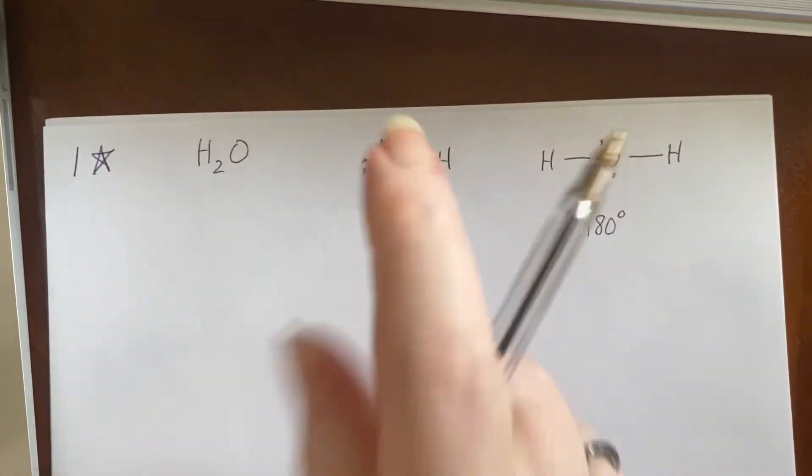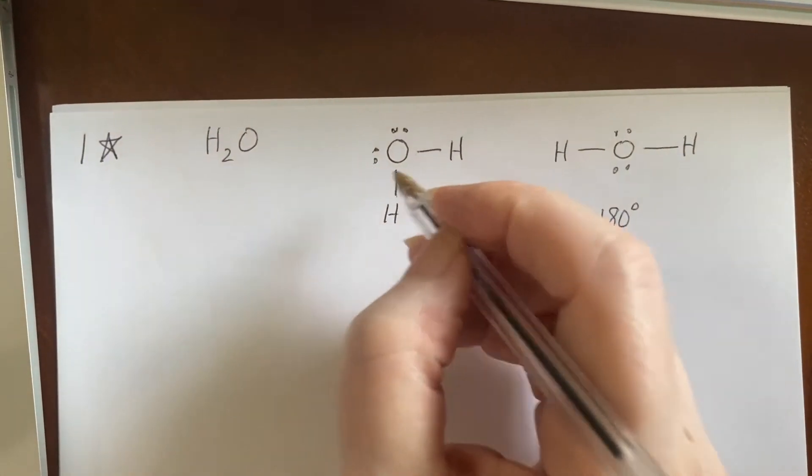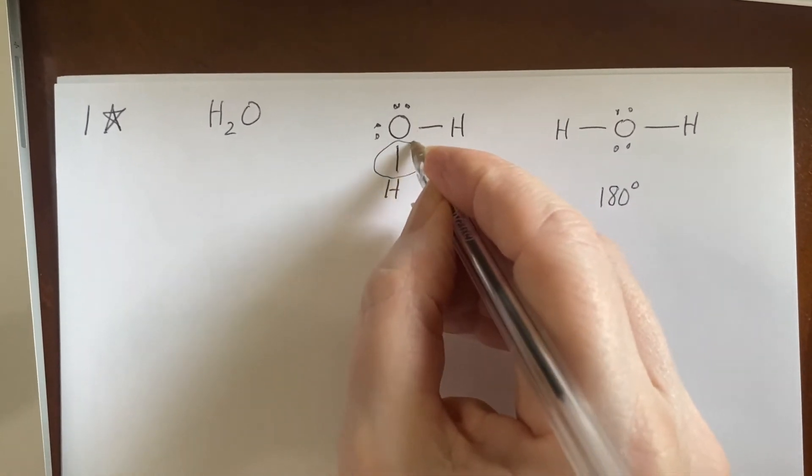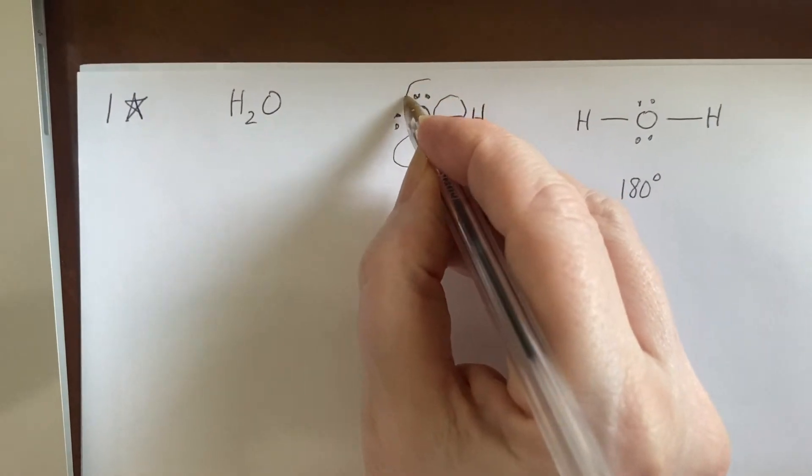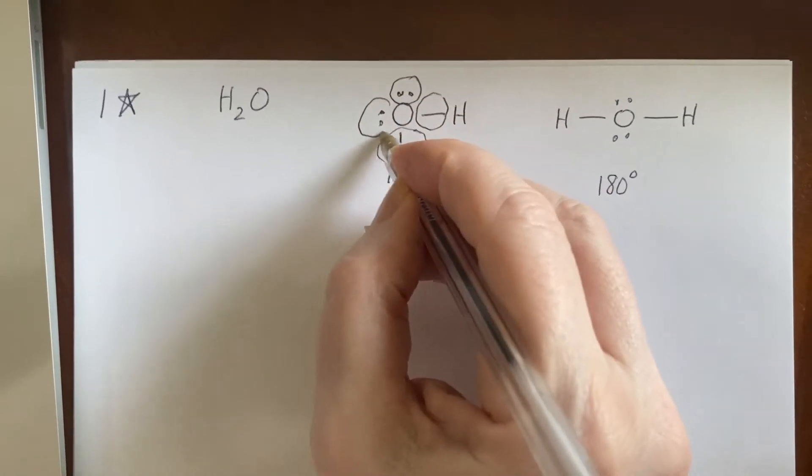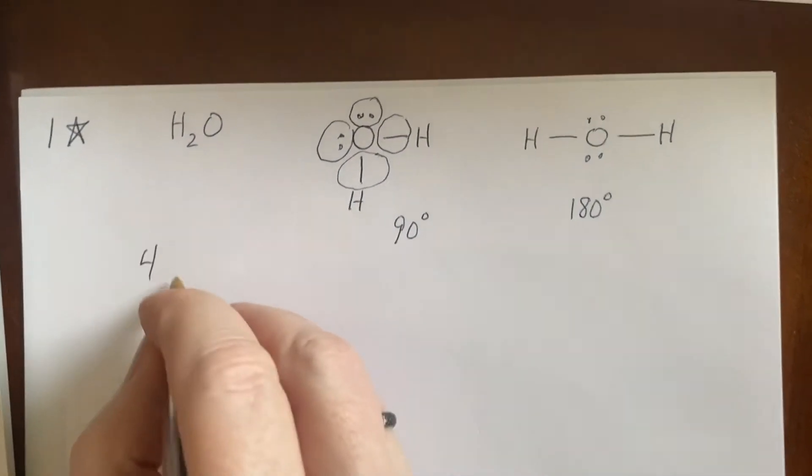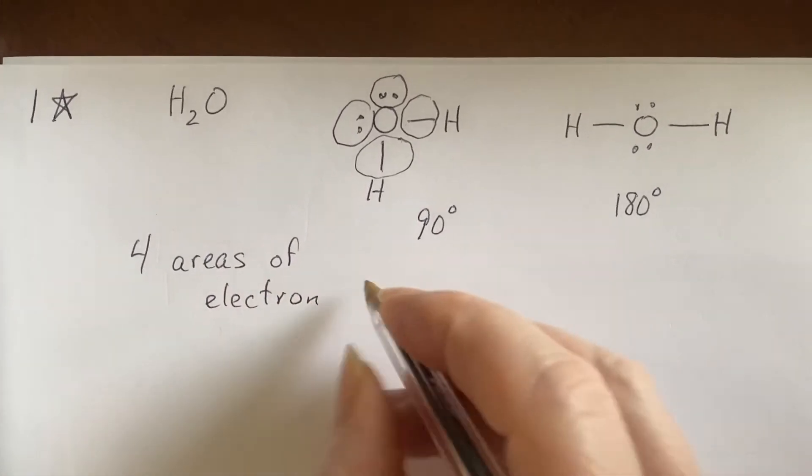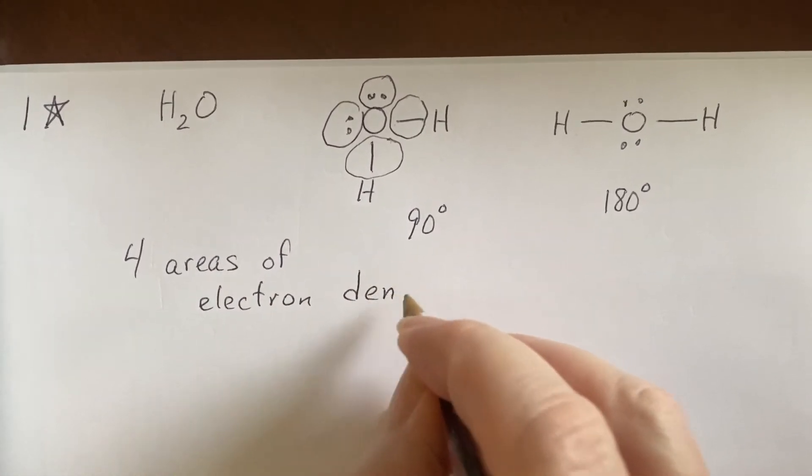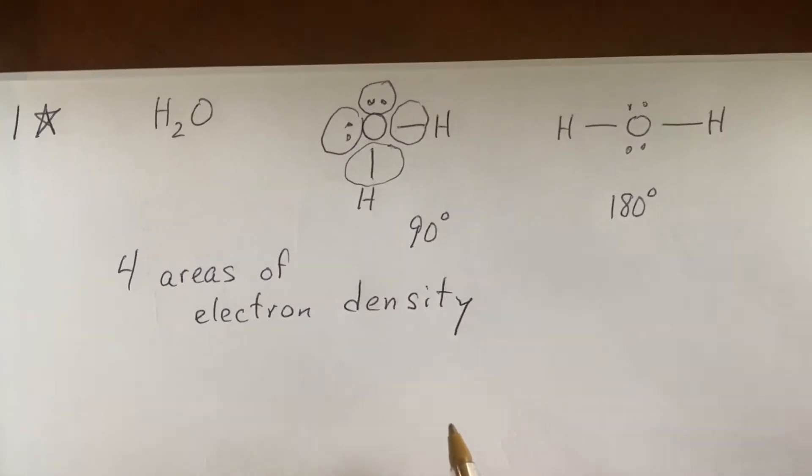Let's look back at the Lewis structure. These are lone pairs. So when I look at the Lewis structure, I see here's an area of electron density. Here's another one, this lone pair, and this lone pair. I have four areas of electron density, and they are trying to get far apart. Four. It's more like this.